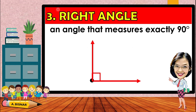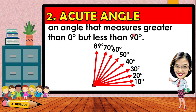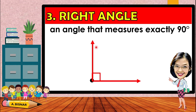The next one is the right angle. It is an angle that measures exactly 90 degrees. The previous angles went up to 89 degrees, because once the measurement reaches 90 degrees, it is called a right angle.